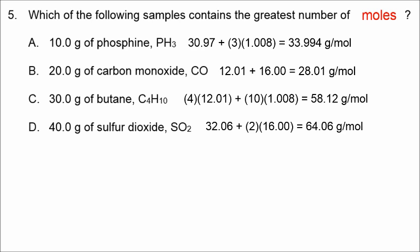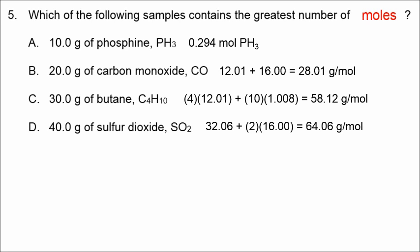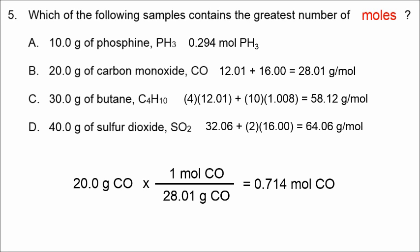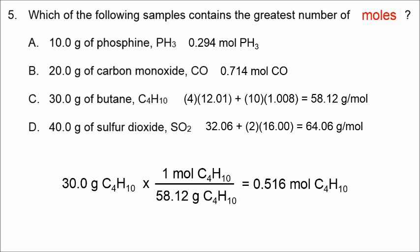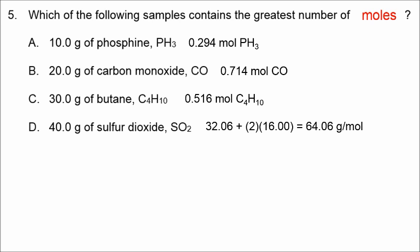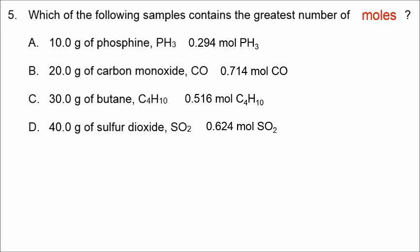I have to go from grams to moles. So, starting with letter A, 10 grams of PH3, phosphine, is going to equal 0.294 moles. So, I'll go ahead and write that down for part A. For part B, the carbon monoxide, the calculation for the moles, it works out to be 0.714. So, that's the answer for B. And then for part C, we're converting 30 grams of butane into moles, and we get 0.516 moles of butane. And finally, for part D, 40 grams of sulfur dioxide is equivalent to 0.624 moles. So, my correct answer that has the largest number of moles, which would also be the largest number of molecules, is B.